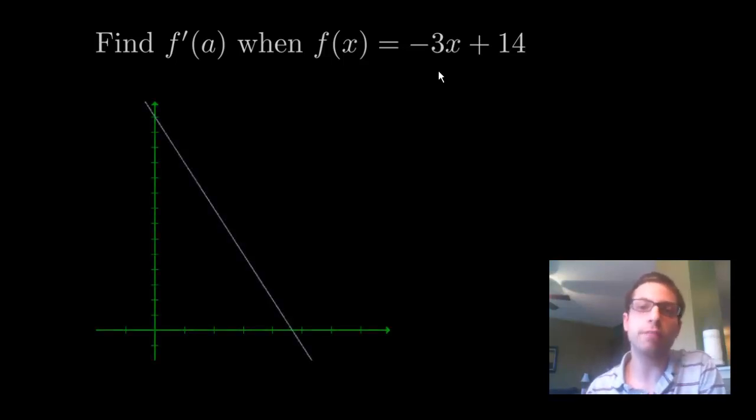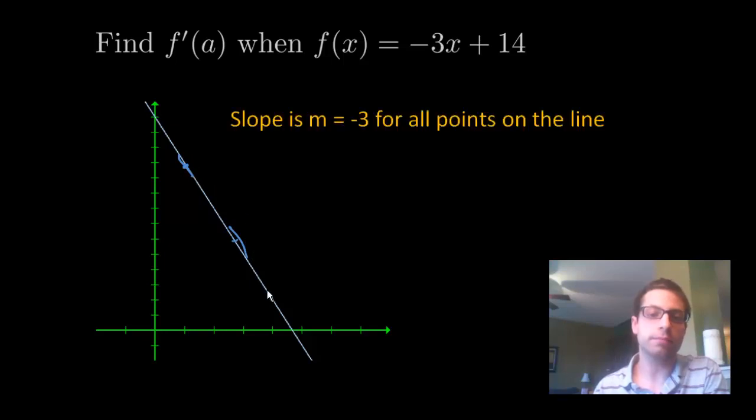So I want to take a look at the graph of -3x + 14, mainly so that we can see that the slope at any given point on this graph is -3. Because of the mx + b form that this line is, the slope is going to be -3.